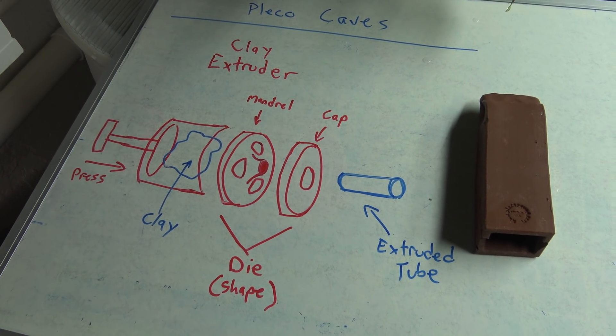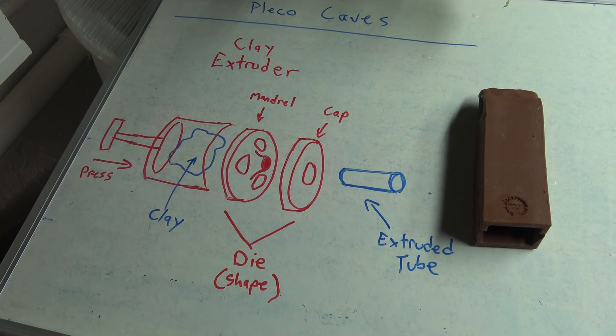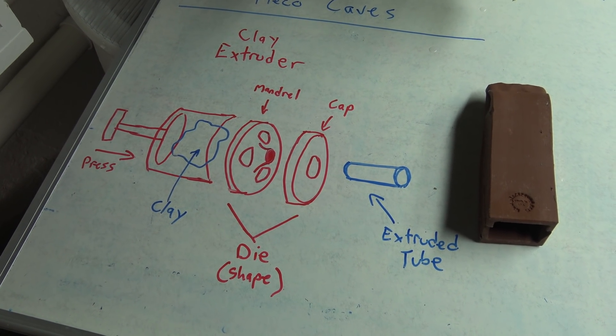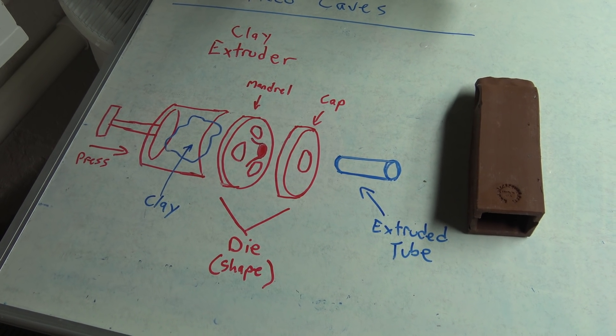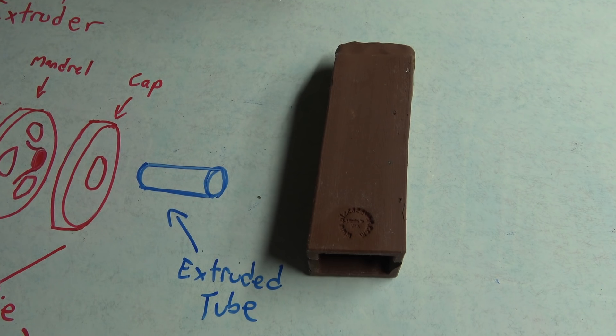From aluminum, to steel, to whatever else. You can imagine it, there's probably an extruder that extrudes it. So clay is a pretty easy thing to extrude. And this is one thing that you can make with an extruder.